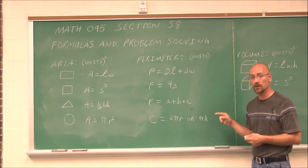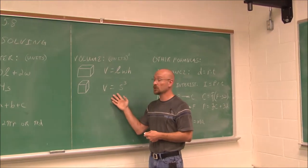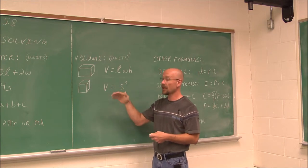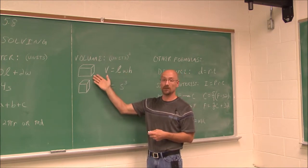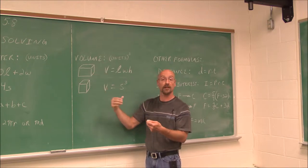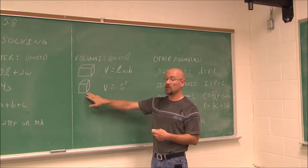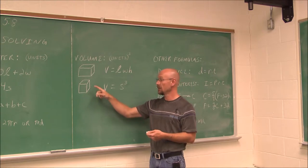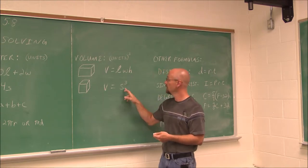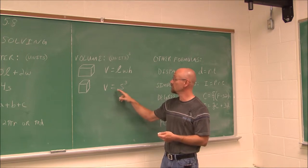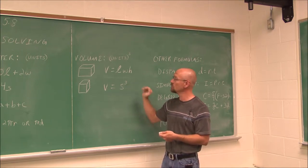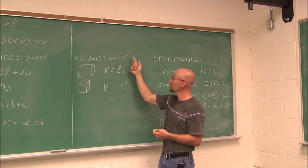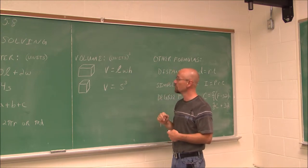We should also be familiar with volume, which has cubed units because it's three dimensions. The volume of a rectangular box is length times width times height. A cube is like a square in three dimensions — all sides are the same — so we use s, and the volume of a cube is s times s times s, or s cubed. A unit times a unit times a unit gives a unit cubed.